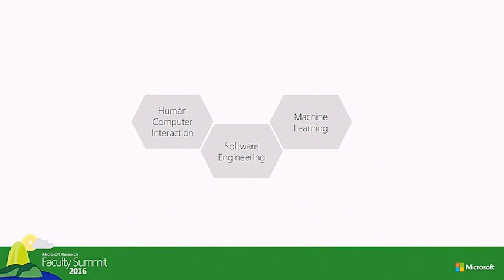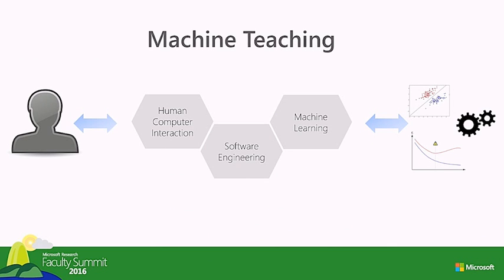We're trying to do this with machine learning by combining three disciplines: machine learning, human-computer interaction, and software engineering. The idea is to take ML complexity and knowledge and put it behind the scenes, then use HCI principles to create abstractions, visualizations, and workflows that make sense to domain experts who don't need to know machine learning — all tied together with solid software engineering principles for a flexible, composable, extensible platform. We call this approach machine teaching.